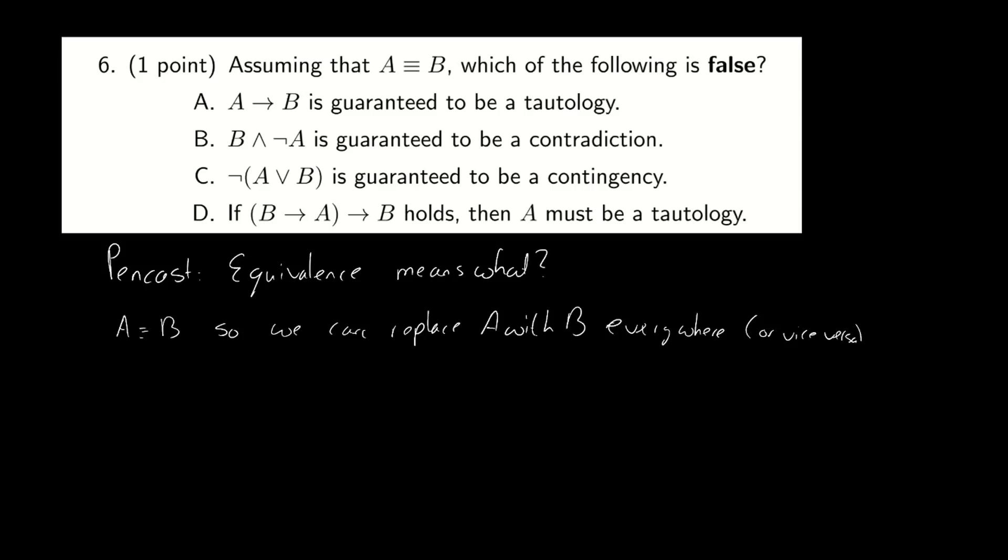The first answer becomes A implies A or if you would prefer B implies B. Now if A is false this thing is true and if A is true this thing is also true. So this thing is always true. Therefore this is indeed a tautology.